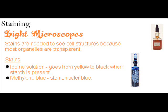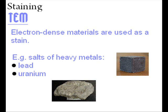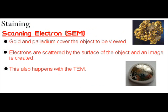For light microscopes, you use dye. Common stains are methylene blue and eosin. The stain is taken up by some parts of the object more than others, and the contrast makes the different parts show up. For the electron microscope, objects are dipped in a solution of heavy metals, like lead. The metal ions scatter the electrons, again creating contrast.